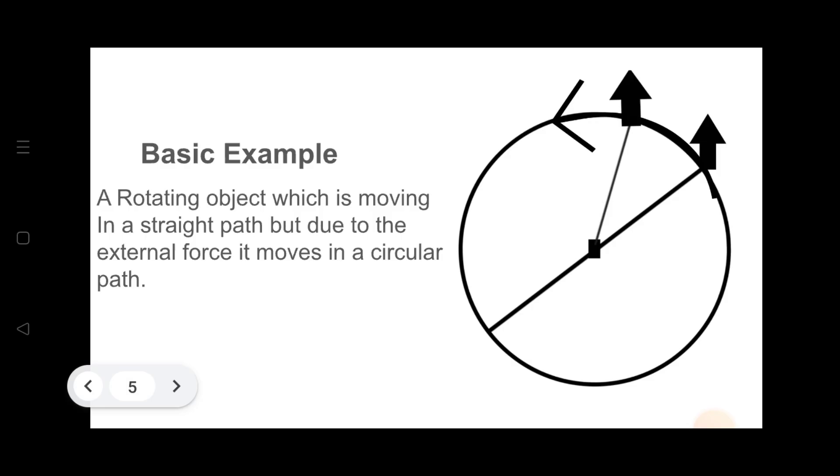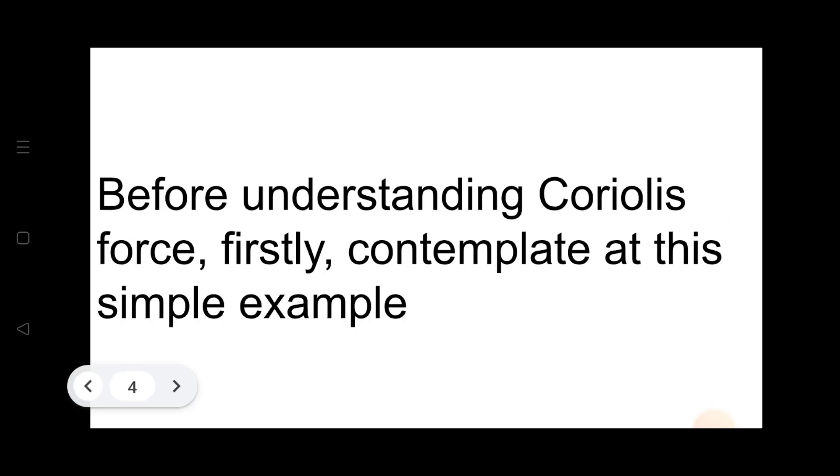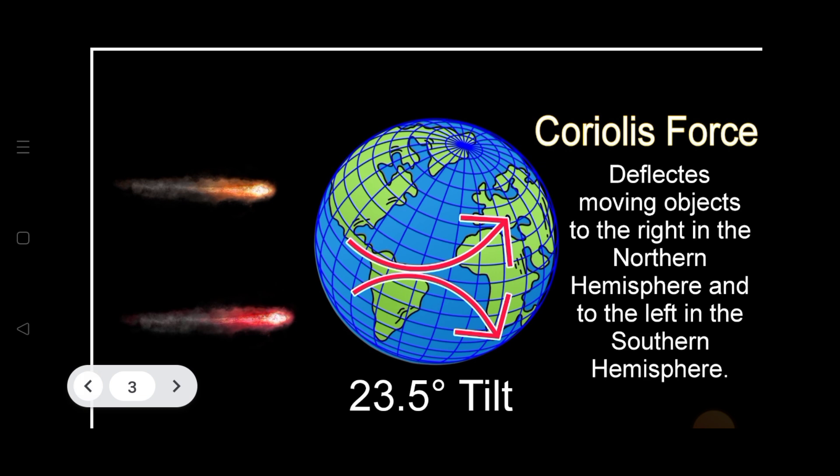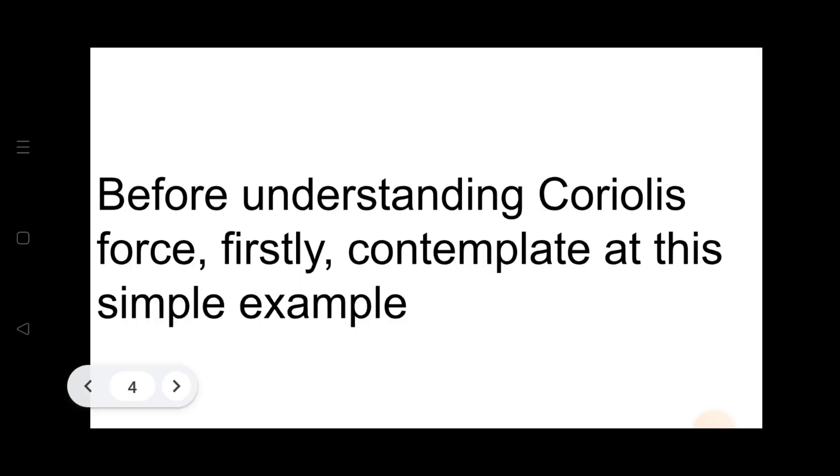Here I want to clarify one thing: the meteoroid does not move in a circle, but it seems to deflect due to its interference with the atmosphere of Earth.